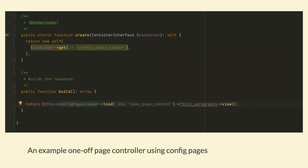Rendering this content is again simple. This is the entire controller for our homepage minus the construct method. We inject the config pages loader service into our controller, then we just render our field. In my homepage example, I have a config page called 'homepage_content' and a field called 'field_paragraphs.' I'm just calling view on the field itself and it renders it and behaves just like any piece of content. Super easy, feels like a node, and can't accidentally be deleted.